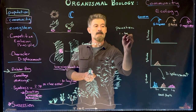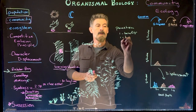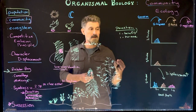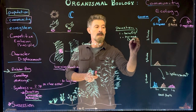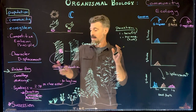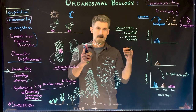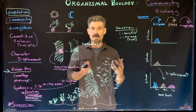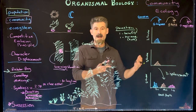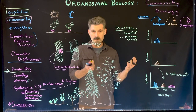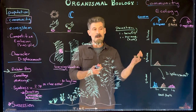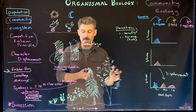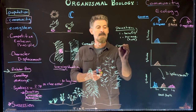In parasitism, one organism benefits and one is harmed. The parasite benefits from the relationship while the host is harmed. Unlike predation, the parasite's objective usually isn't to kill and consume the organism — it's to live with it and feed off it as long as that organism stays alive. If the host dies, the parasite loses its food source. So the parasite harms the host and takes from it, but the host gets no benefit whatsoever.